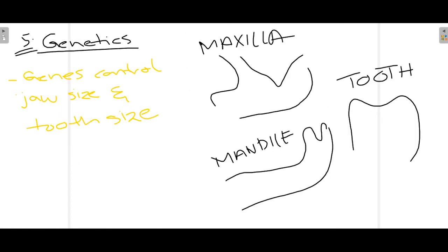The last cause is genetics. Genes control every organ system of our body, including the size of the maxilla, mandible, and teeth. If there is any deviation from normality in any of these, impaction results. For example, if the maxilla or mandible is small and the tooth is large, impaction occurs — and vice versa. Genes control jaw size and tooth size, so any mismatch leads to impaction.